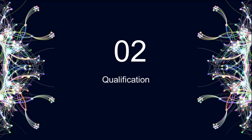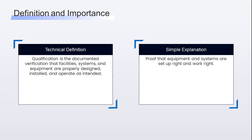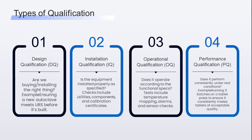Let's now zoom in on qualification. Technical definition: qualification is the documented verification that facilities, systems, and equipment are properly designed, installed, and operate as intended. In simple words, it's proof that your equipment and systems are set up right and work right. Let's look at the types of qualification — the four-step model. DQ, design qualification: are we buying and installing the right thing?